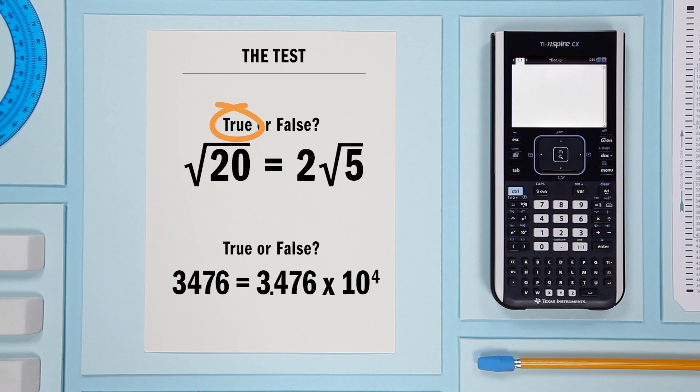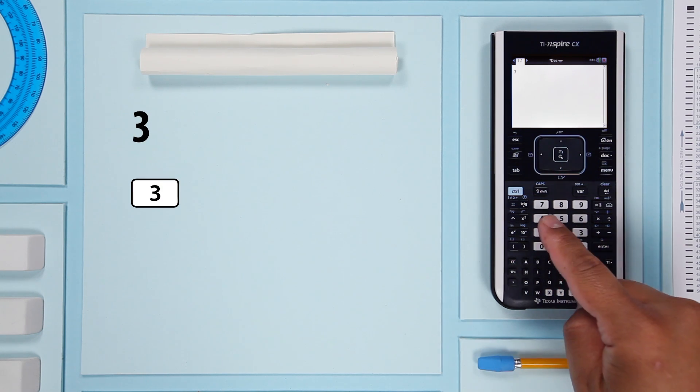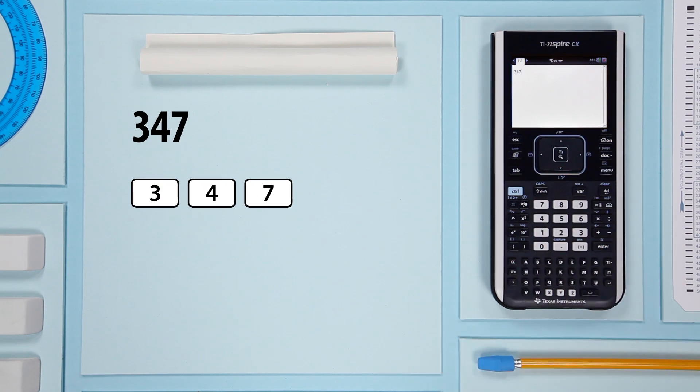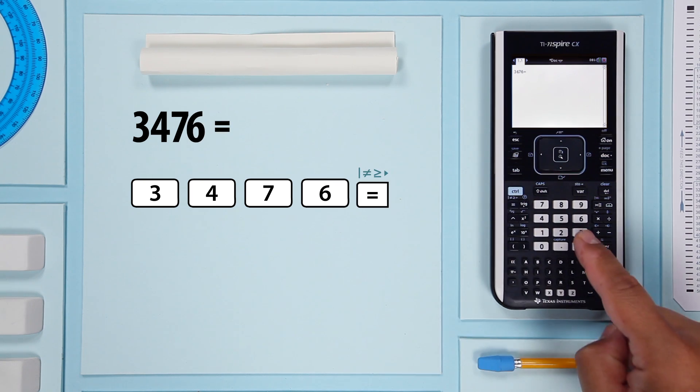Let's look at another example. I'm going to go a little faster this time. Enter the first statement, equals, and the second statement times 10 to the fourth.